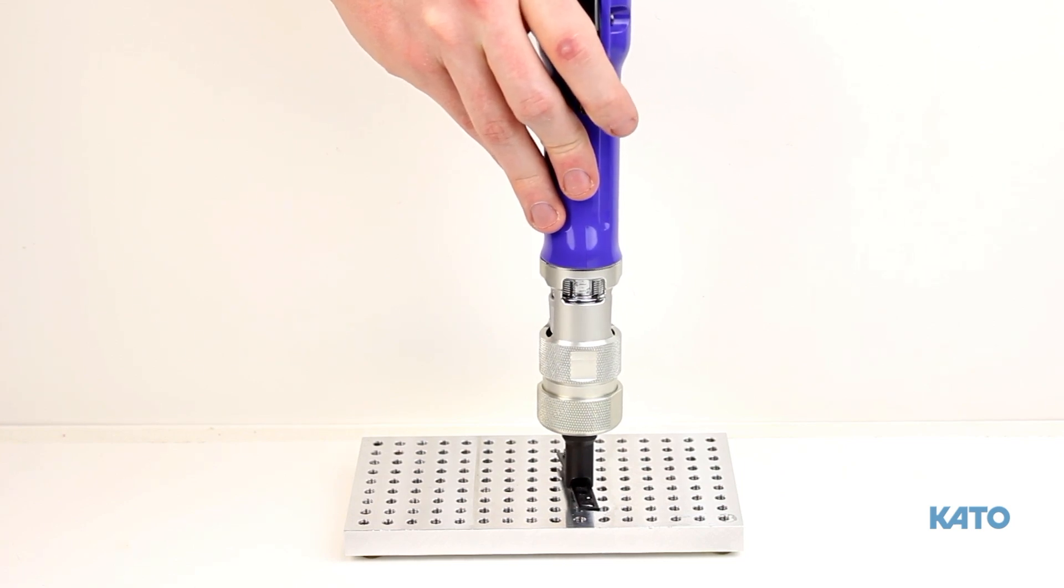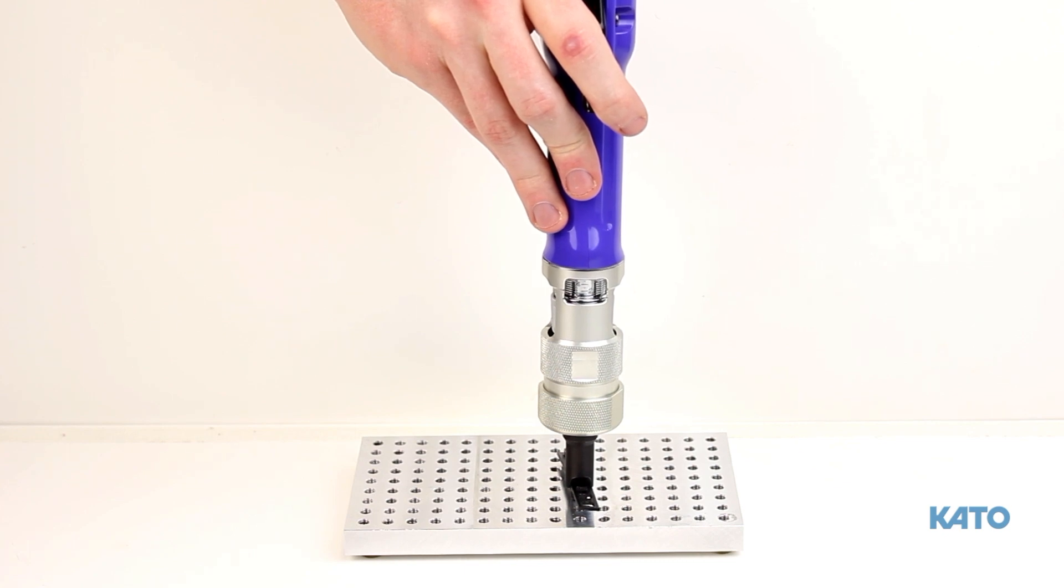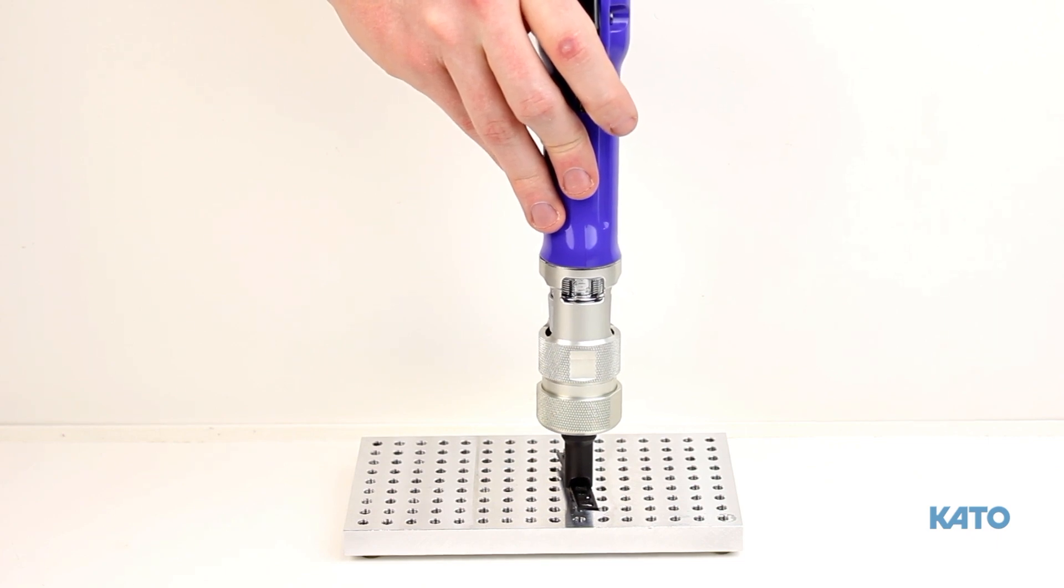Releasing the trigger will reset the tool, and pressing the trigger again will cause the tool to turn clockwise. If you accidentally release the trigger early, simply press it again and the tool will re-enter the installed insert, bottom out and reverse.